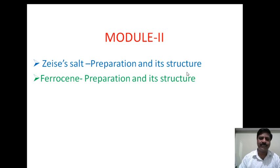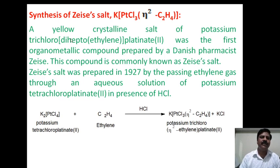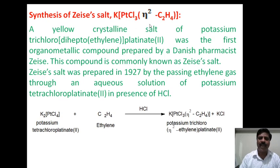The IUPAC name of Zeise's salt can be written as potassium trichloro(dihapto-ethylene)platinate(2−). This is an ionic compound — when it dissociates it produces K⁺ and an anionic complex. Therefore it is a complex compound belonging to organometallic compounds. This compound is a yellow crystalline precipitate, first prepared by Danish chemist Zeise.